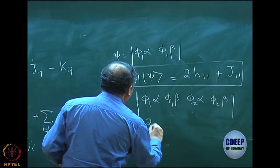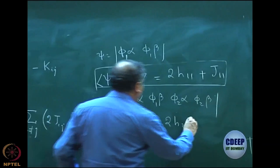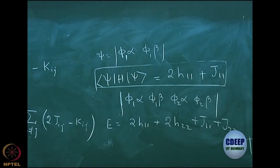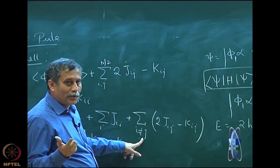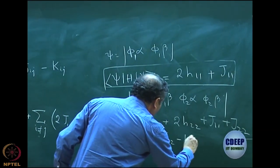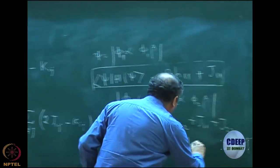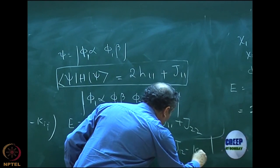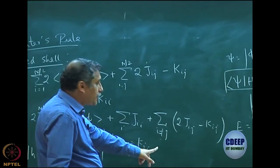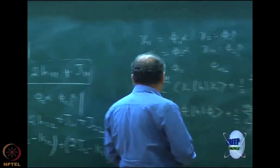What will the energy be? 2H_11 plus 2H_22 — that is the first part. Then applying the Coulomb terms: J_11 plus J_22. Now when i is not equal to j, there is J_12. It can be 12 or 21, so it becomes 2J_12 minus K_12. Since I have not used i less than j, I also write plus 2J_21 minus K_21, which gives 4J_12 minus 2K_12 in total.